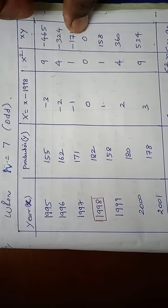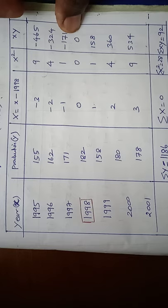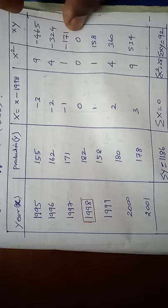The middle term can be taken as 1998. The production value is in the second column. Third column, capital X equal to X minus middle value. Next column is X square, another column is XY.